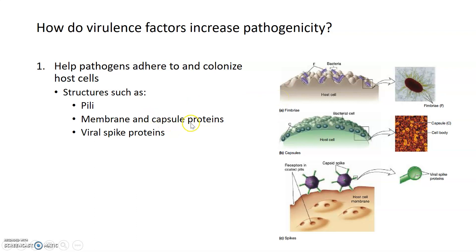Structures on the outside of bacteria like membranes and capsule proteins are also virulence factors that help bacteria adhere to host cells and colonize tissue. Viral spike proteins in the envelopes of particular viruses are also virulence factors — they help viruses attach to a host cell membrane and ultimately enter the cell and start replicating.